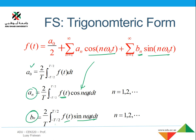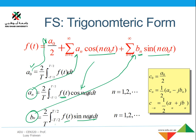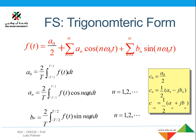Once we know the a_0, a_n, and b_n values, we just plug them in and get the trigonometric representation of our periodic signal. There is also a relationship between the complex form and the trigonometric form.